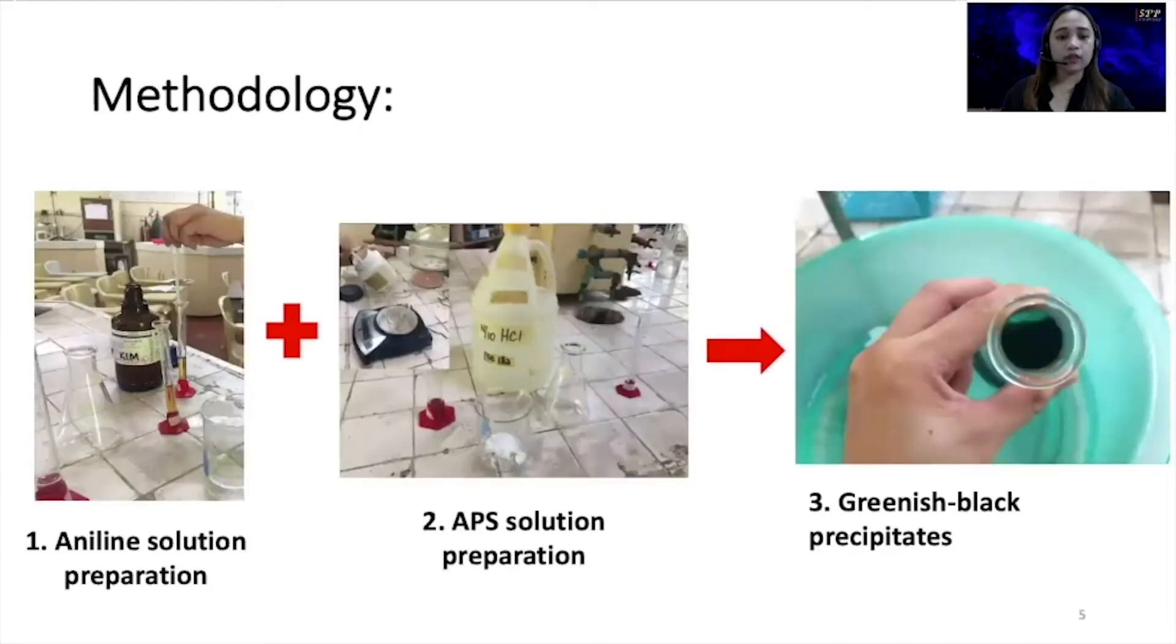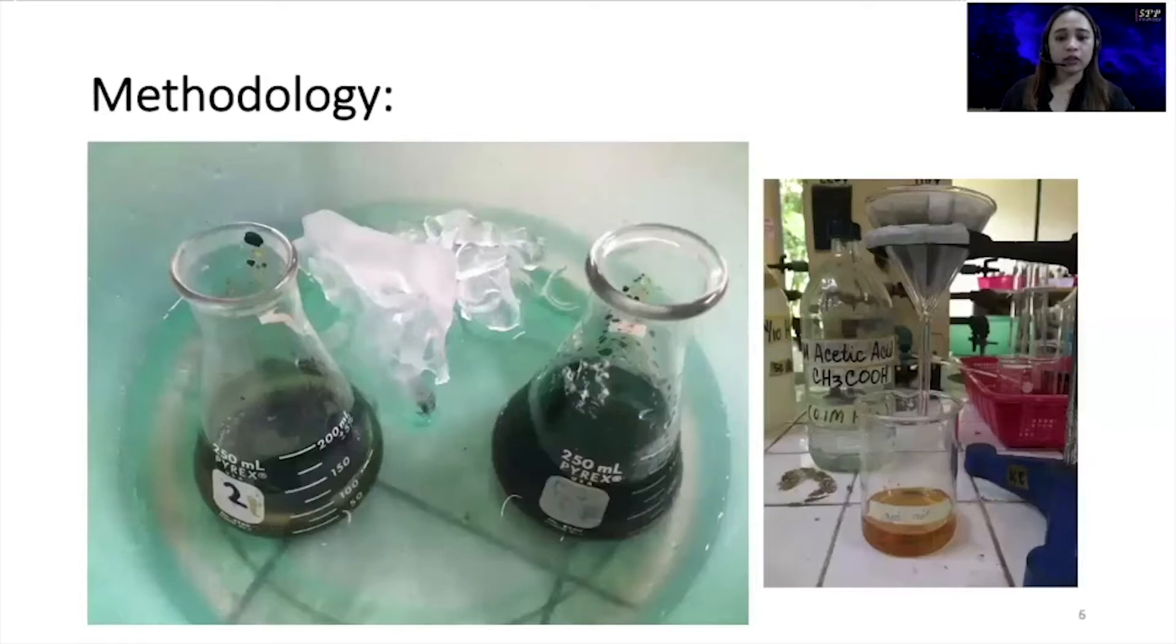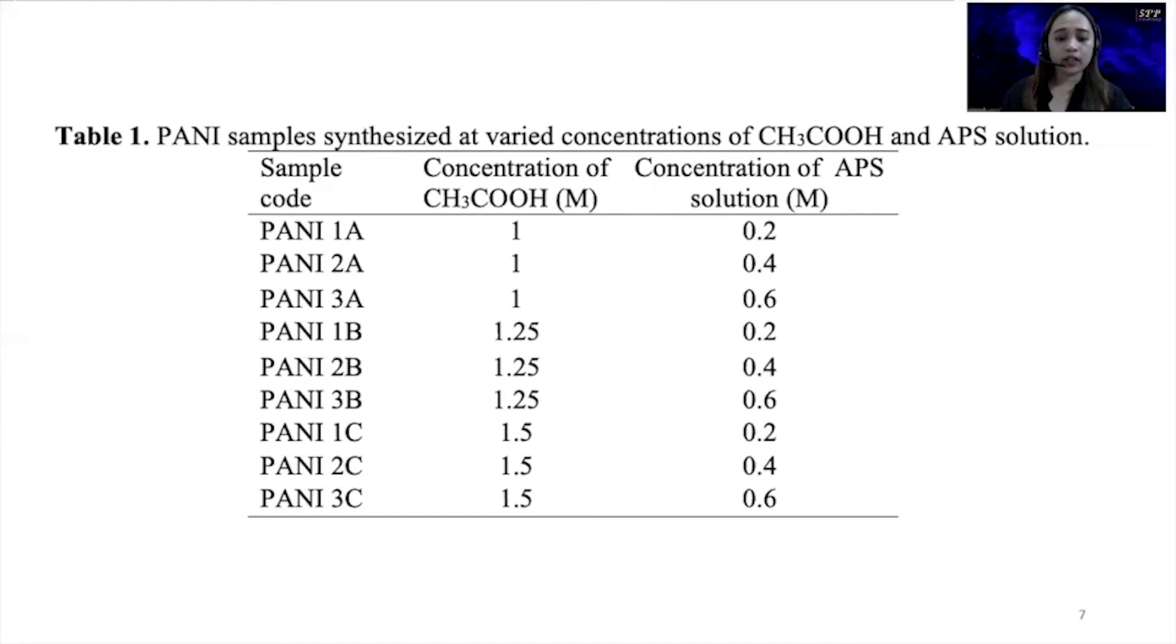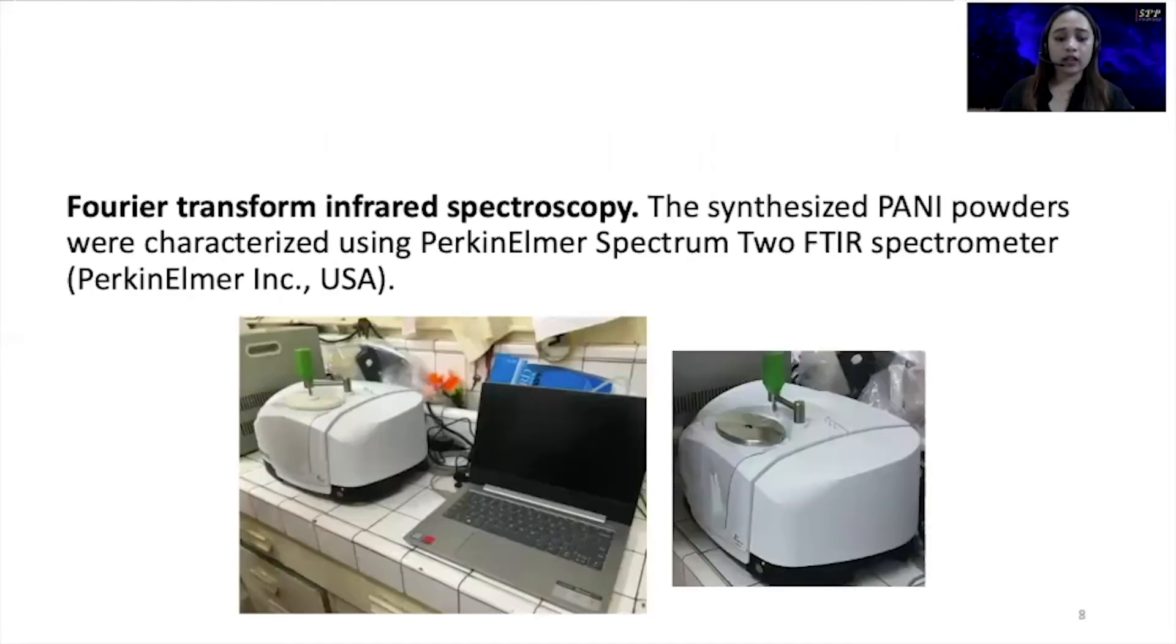For the methodology, in the first image is the aniline solution preparation. In the second image is the APS solution preparation. The two solutions were mixed to commence polymerization. The reaction was kept under constant stirring in an ice bath until greenish-black precipitates begin to form. The synthesized products were then filtered and washed. The samples were air dried and labeled according to composition as shown in Table 1. So here is the FTIR equipment.